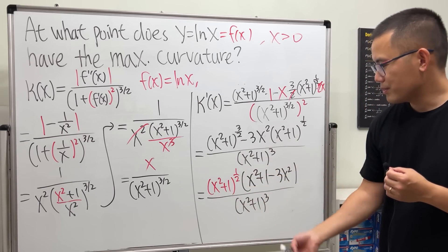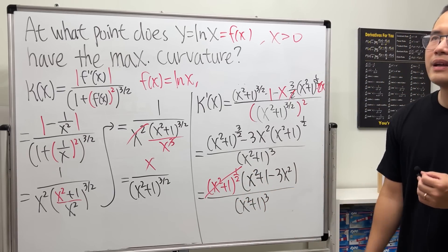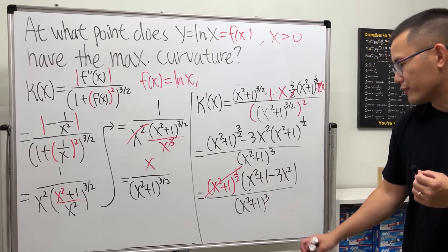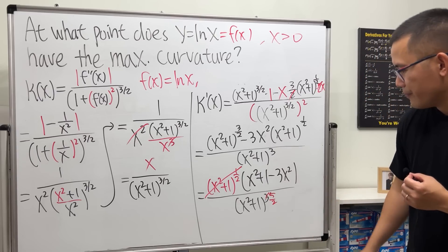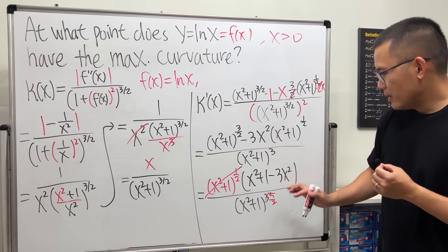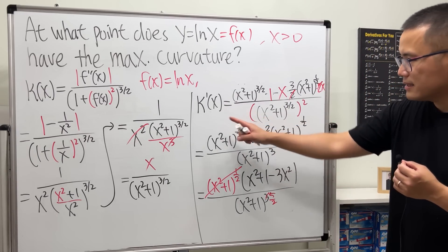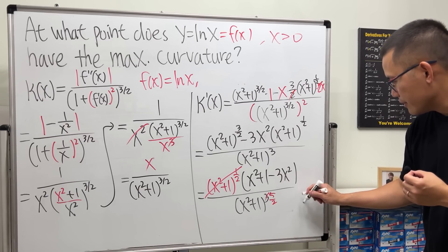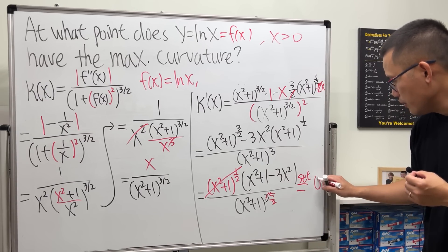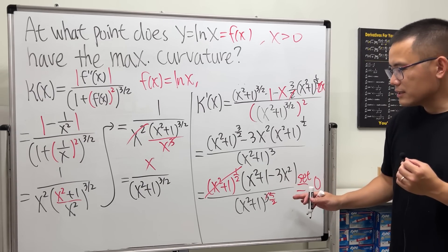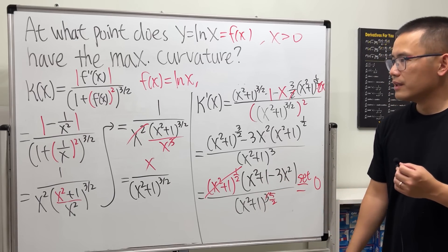We can reduce the power slightly — 3/2 minus 1/2 gives 5/2 — but really you don't have to go further. We just set the derivative equal to zero. The only way it equals zero is if the numerator bracket equals zero.